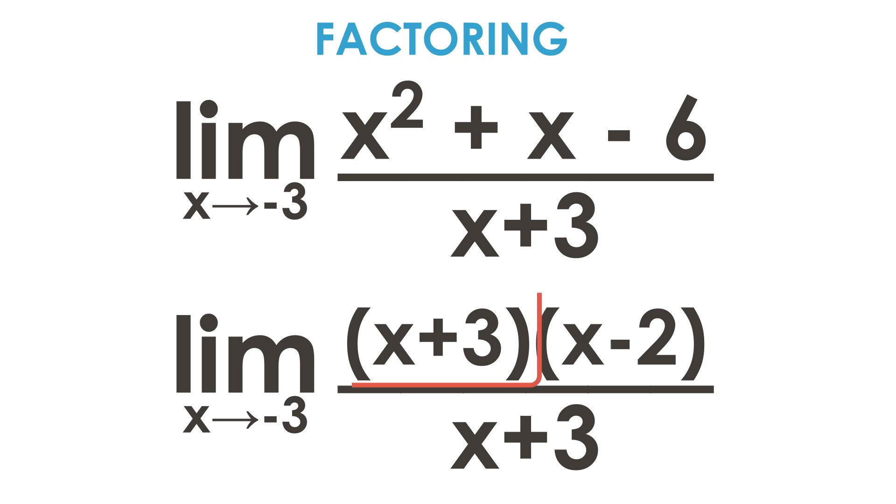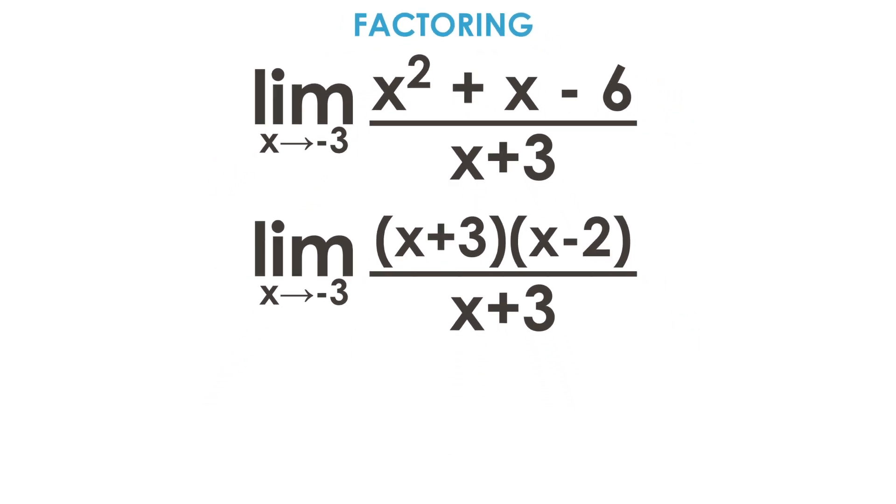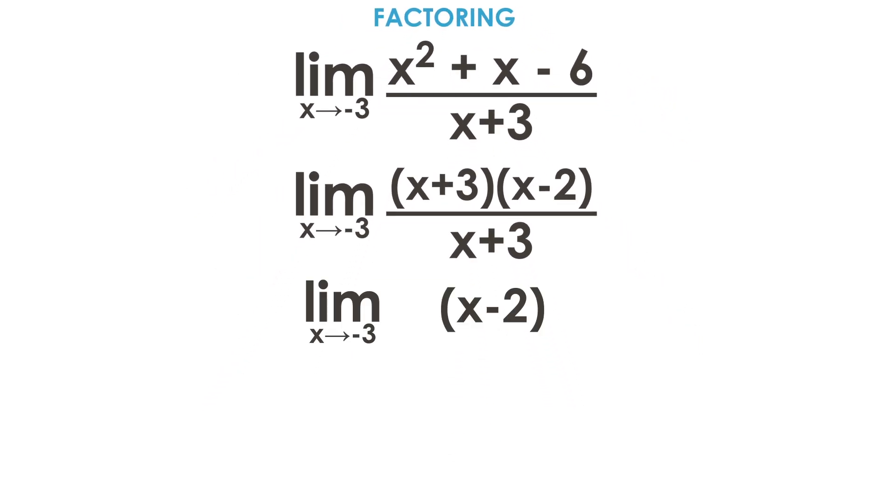Notice how we have an x plus 3 in the numerator and an x plus 3 in the denominator. So they will cancel each other out and the only thing we are left with is the x minus 2 in parentheses. So now we have the limit as x approaches negative 3 of x minus 2.